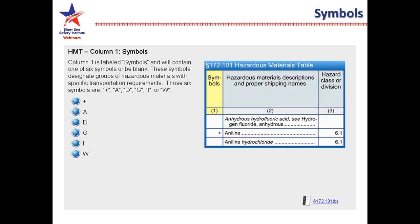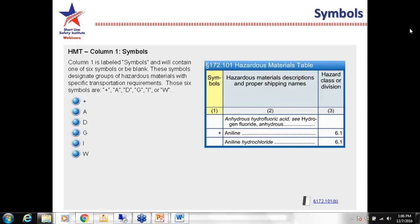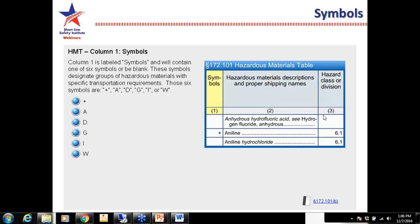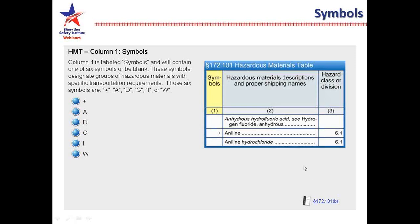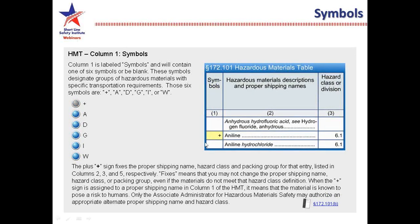Column 1 is labeled symbols and will contain one of six symbols. These symbols designate groups of hazardous materials with specific transportation requirements. Those six symbols are a plus, A, D, G, I, or W. The plus sign fixes the proper shipping name, hazard class, and packing group for that entry listed in columns 2 and 3 respectively. Fixes means you may not change the proper shipping name, hazard class, or packing group, even if the materials do not meet the hazard class definition. When the plus sign is assigned to the proper shipping name in column 1, it means the material is known to pose a risk to humans.